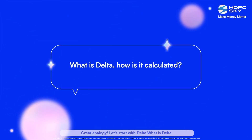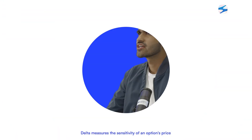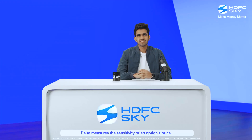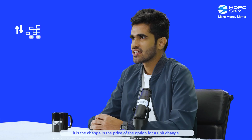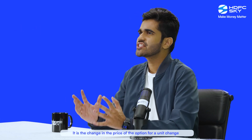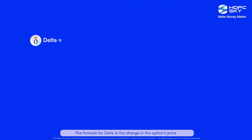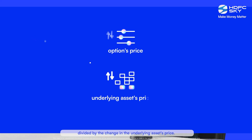Let's start with Delta. What is Delta, how is it calculated, and how does it affect options pricing? Delta measures the sensitivity of an options price to changes in the price of the underlying asset. It is the change in the price of the option for a unit change in the price of the underlying asset. The formula for Delta is the change in the options price divided by the change in the underlying asset's price.